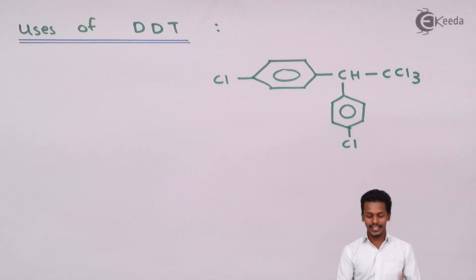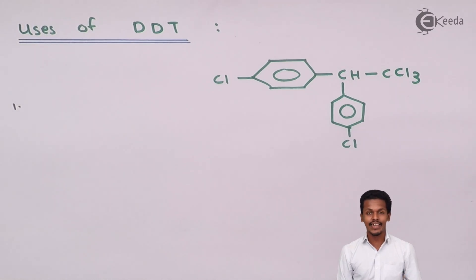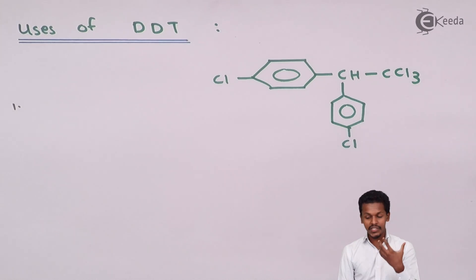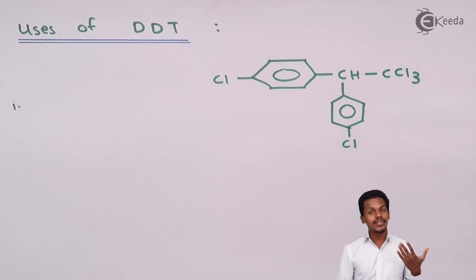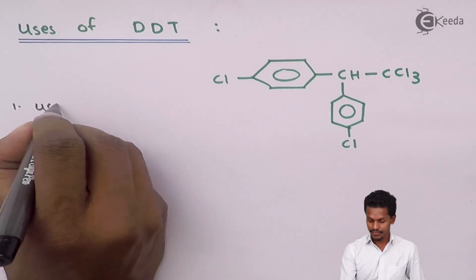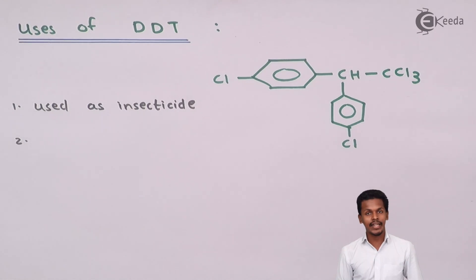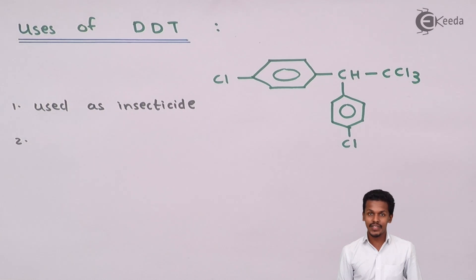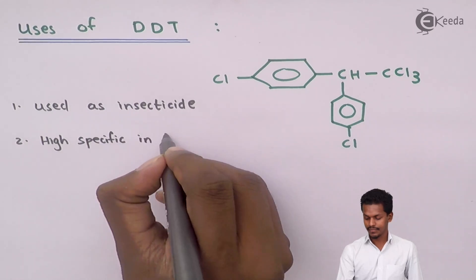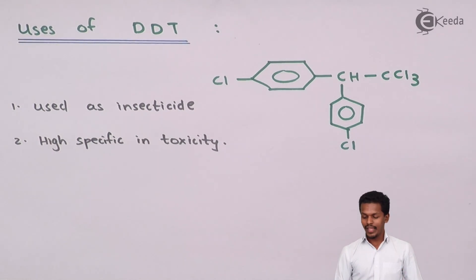The first use of DDT is that it is used as an insecticide. As an insecticide it kills mosquitoes, thereby preventing the spread of malaria in society. DDT is also highly specific in its toxicity — it has a very specific effect on mosquitoes and houseflies only, and it will not affect most other living species.